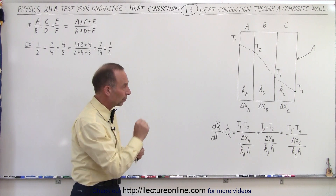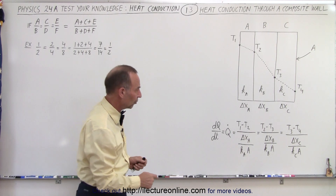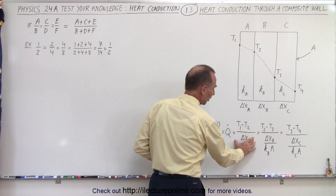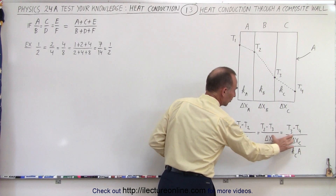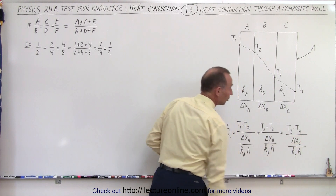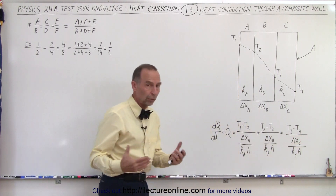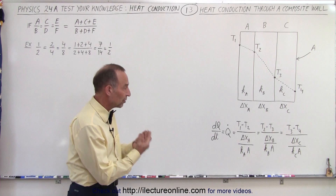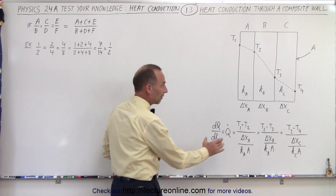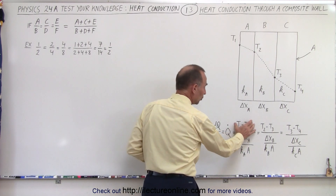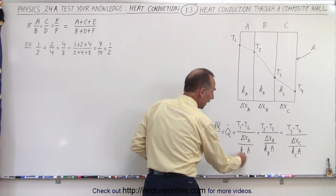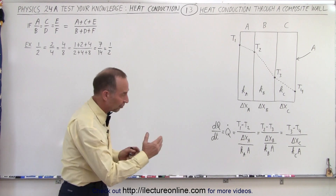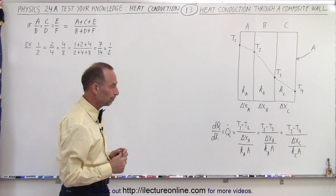The heat flow must be equal through each section. So we can say that the heat flow through the first section equals the heat flow through the second section equals the heat flow through the third section. We use the equation where delta T is in the numerator and the heat resistance is in the denominator for each section.